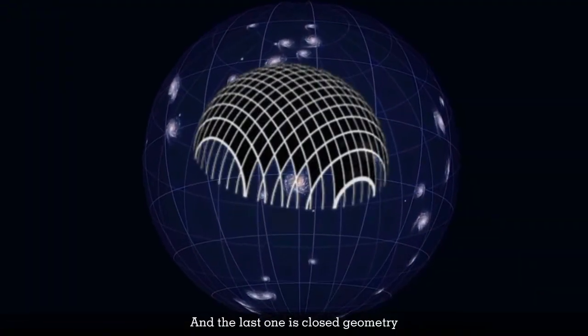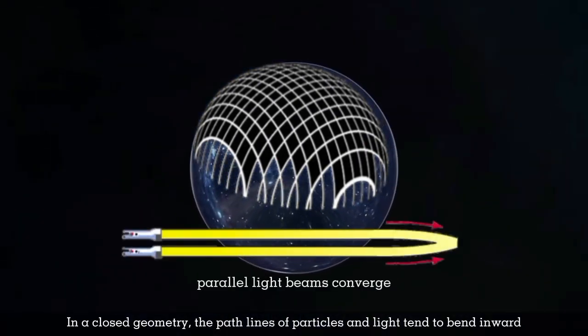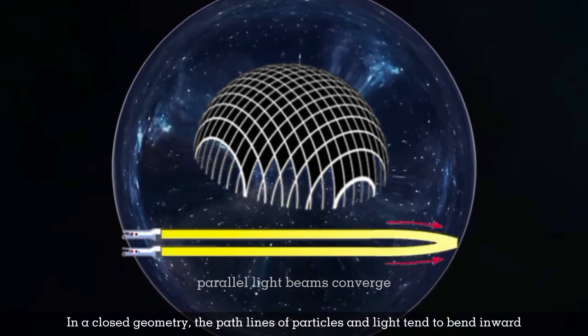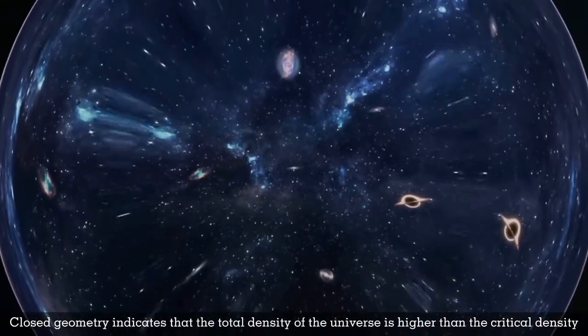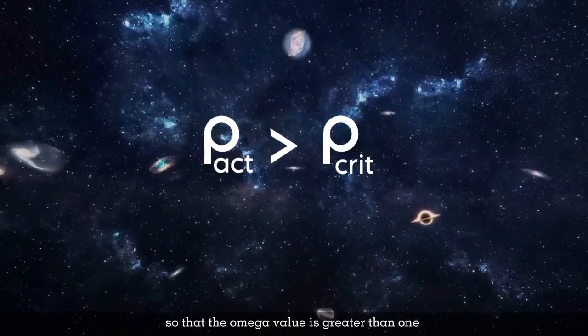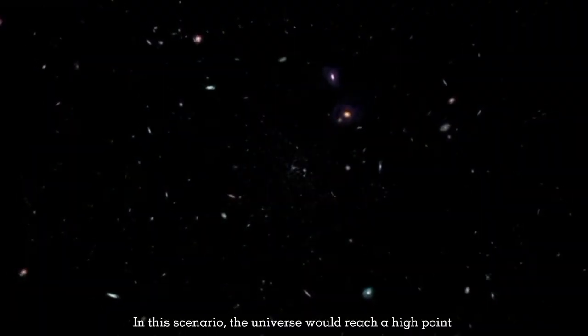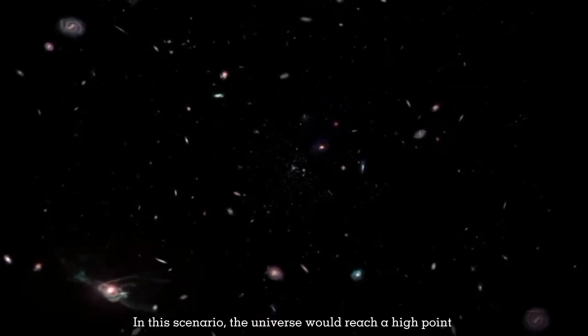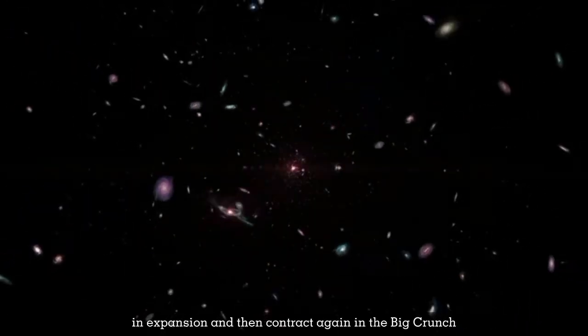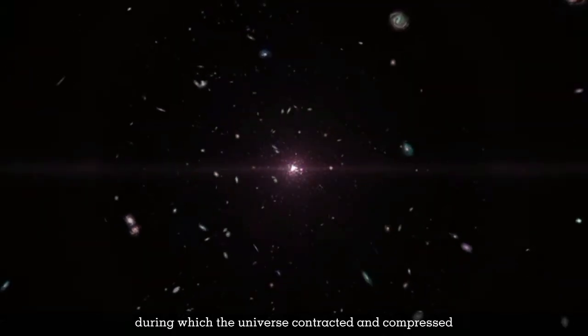And the last one is closed geometry. In a closed geometry, the path lines of particles and light tend to bend inward. Closed geometry indicates that the total density of the universe is higher than the critical density, so that the omega value is greater than 1. In this scenario, the universe would reach a high point in expansion and then contract again in the big crunch, during which the universe contracted and compressed.